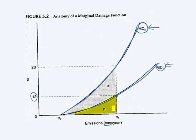In another scenario for MD2, if we have the same amount of emissions e1 and we increase it by one ton, we can expect a cost of $28.